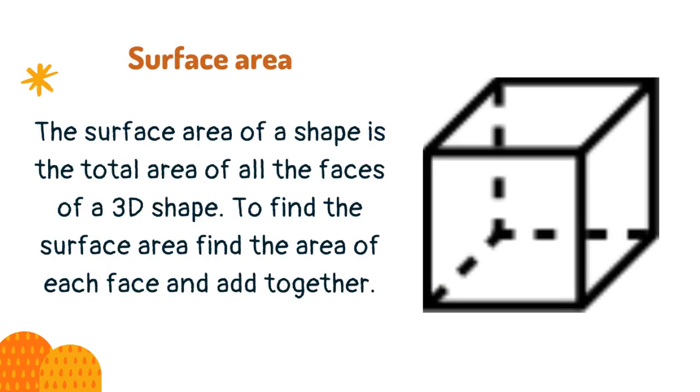The surface area of a shape is the total area of all the faces of a 3D shape. To find the surface area find the area of each face and add together.